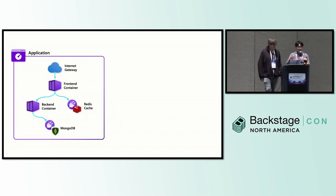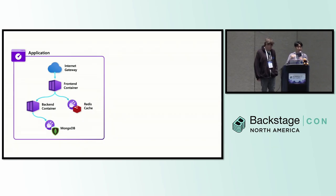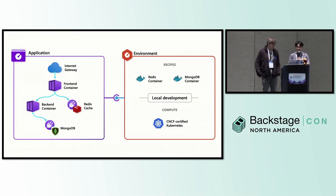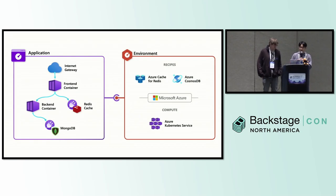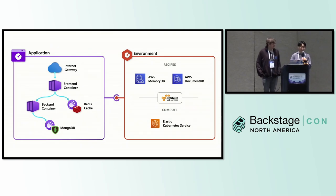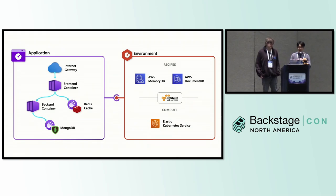When I'm ready as a developer to deploy this, I would use Radius to define my application and use Radius to do the actual deployment. As a first step, I would usually deploy to my local environment, making use of local Docker containers and a local Kubernetes cluster. Then the next step would be to take the same application definition and deploy it to my Azure environment using Azure services. Same story with AWS — if I'm ready to test in AWS, I take the same application, same definition, and use the Radius toolset to deploy it into AWS using AWS services.